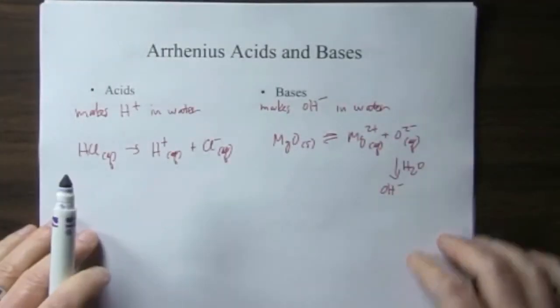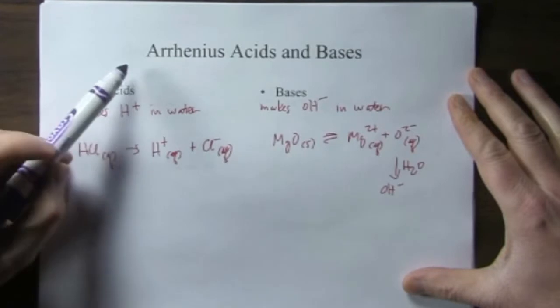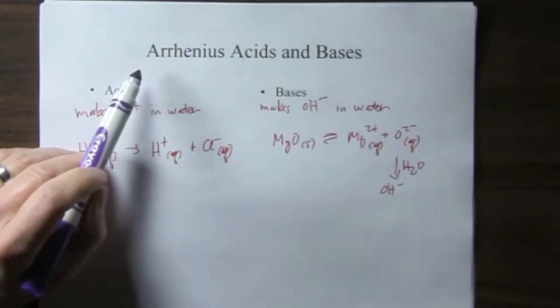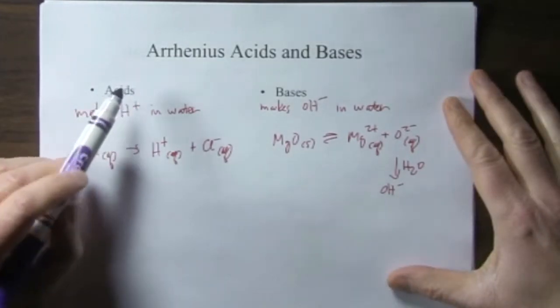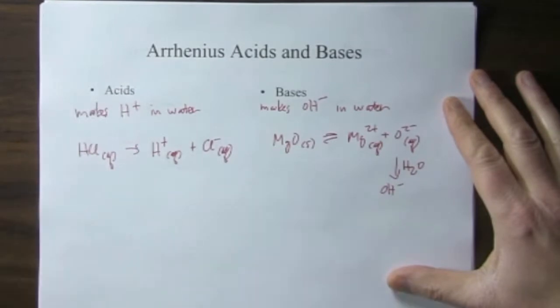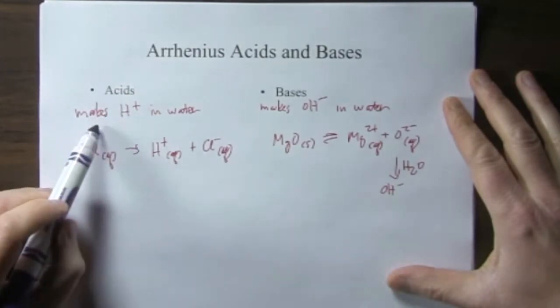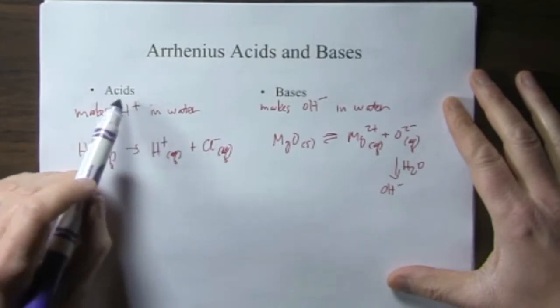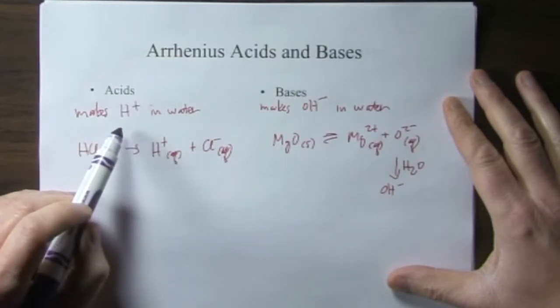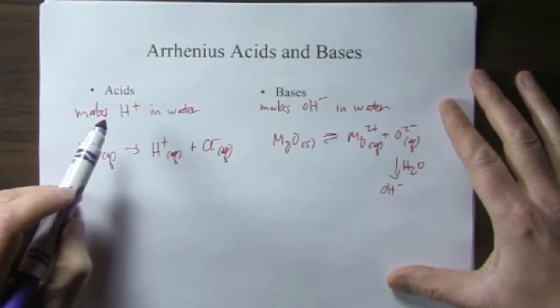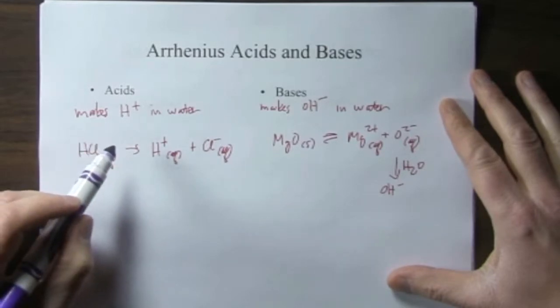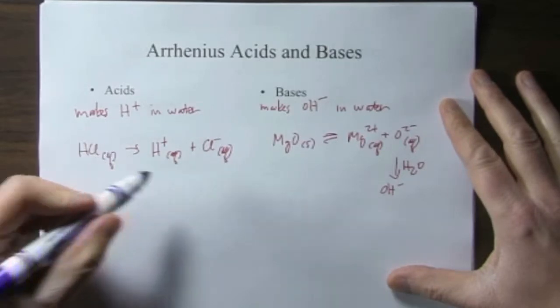So to review, historically, Arrhenius was one of the first chemists to come up with a working definition of acid and base. His definition was that an acid is a compound that makes hydrogen ions in water, or protons in water, and now we know that those are actually hydronium ions.